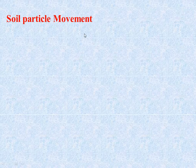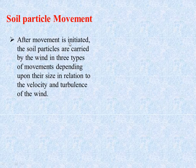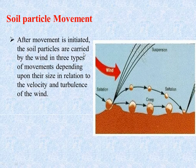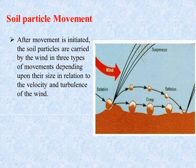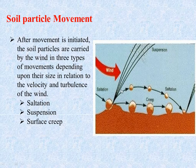Let's see soil particle movement. After the movement is initiated, soil particles are carried by wind in three types of movement depending on their size in relation to velocity and turbulence: saltation, suspension, and surface creep as shown in the figure. Wind erosion is a combination of these three kinds of movement.